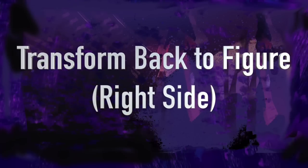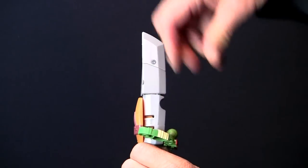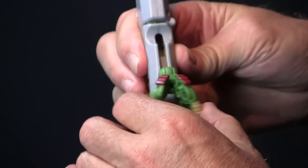Transform back into a figure by twisting the leg, unfolding the foot. Collapse the blade. Swivel the arm back and snap together.